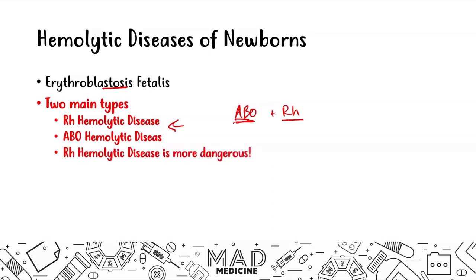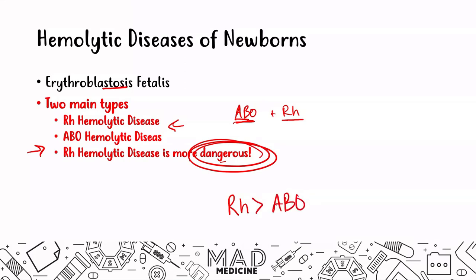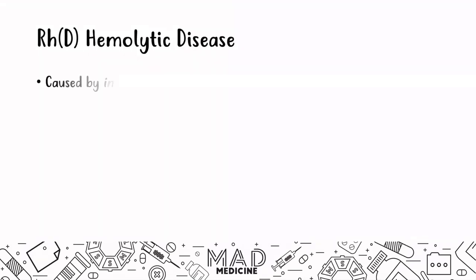The RH hemolytic disease is more dangerous, and we're going to talk about why — specifically because of its effects on the fetus. This disease is caused by in utero maternal blood exchange with the fetus. Blood is usually blocked off by the placenta, but if fetal and maternal blood mix, you can see RH hemolytic disease.